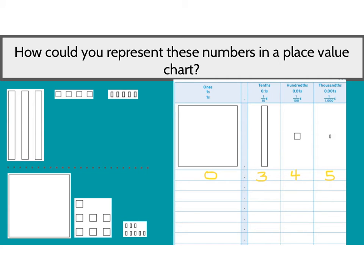Let's take a look at the second one. When we look at this one, we have a whole, some hundredths, and some thousandths. So when we go to plug those into the chart, we have one whole, seven hundredths, and eight thousandths. I didn't have any tenths for this problem — nothing that was tenths — so that means I plug in a zero there. We would say that number as one and seventy-eight thousandths.